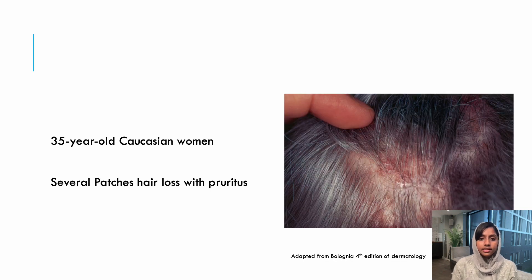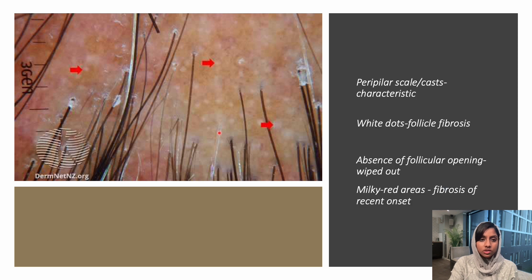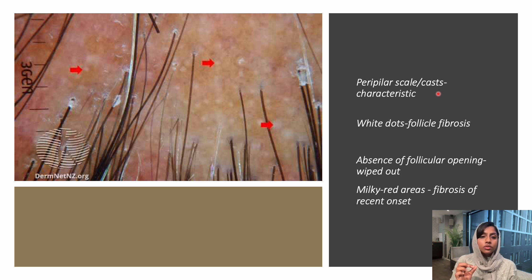The next clinical scenario: a 35-year-old Caucasian woman comes with complaints of several patches of hair loss with pruritus. On trichoscopy, you can see perifollicular scaling with casts around the hair follicle. You can also see white dots which are both pinpoint and fibrotic, as well as milky red areas. This is a classical picture of lichen planopilaris, where the peripylar scale or cast indicates hyperkeratosis of the root sheath.